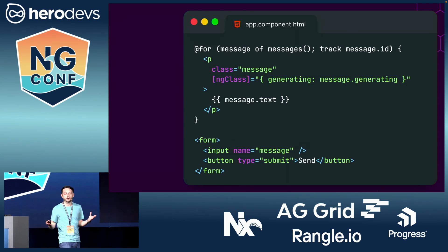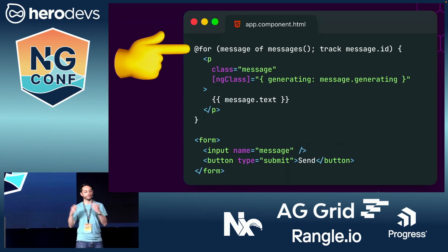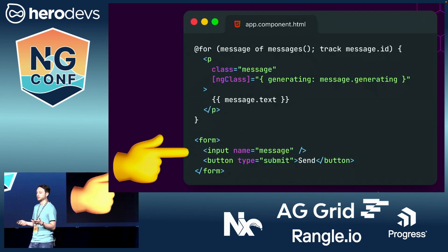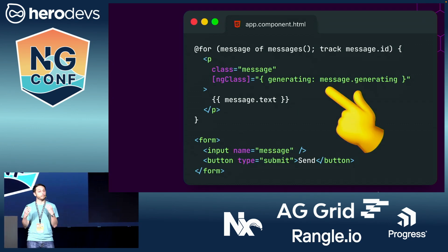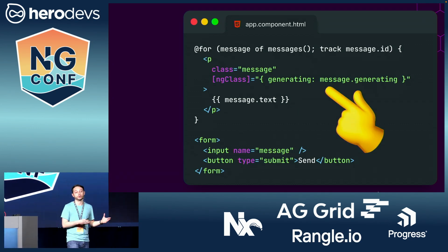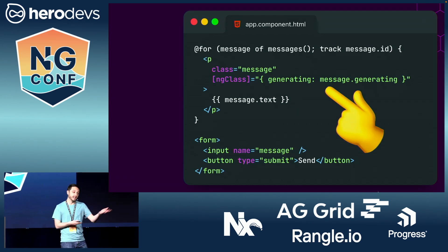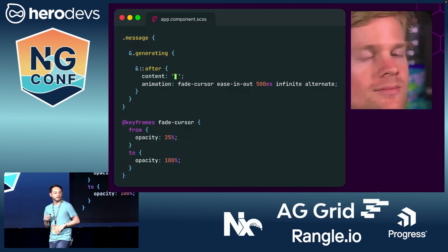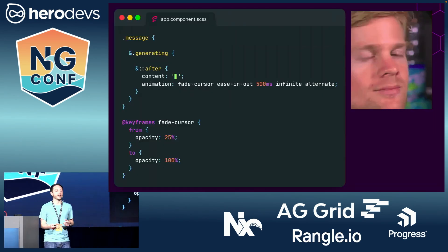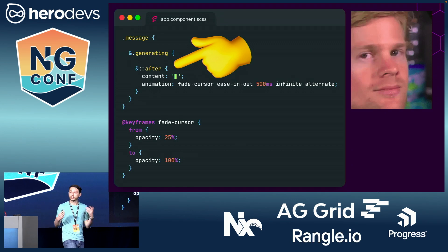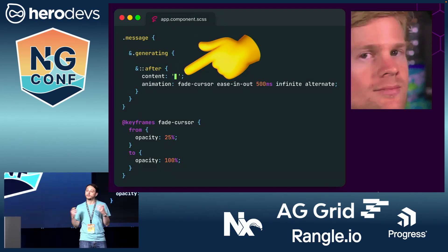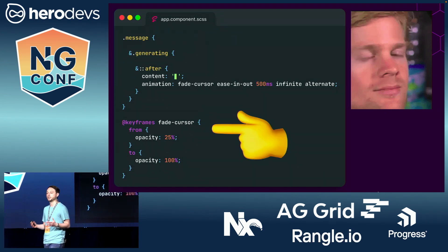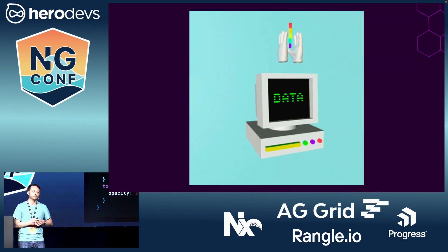The actual UI code for our app is pretty simple. We have a for loop showing a list of messages and a form for the user to send messages. For the actual messages, we use the ng-class directive to add the generating CSS class while the message is in progress. To create the blinking cursor effect, we use the CSS after pseudo-element to add a block character at the end of the message, and we use the keyframes animation to fade its opacity in and out.